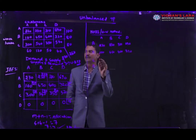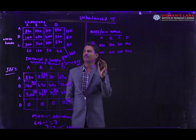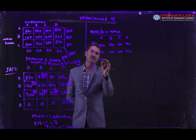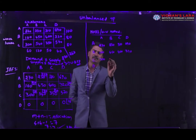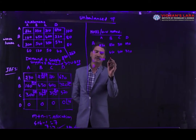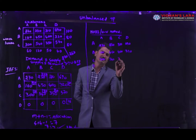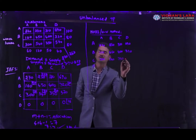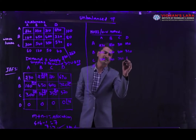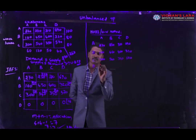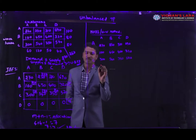After calculating the shadow price, again we are going to check if the problem is at optimality. If it reaches optimality, we stop the solution. Otherwise, we are going to draw the loops and then restart the solution.